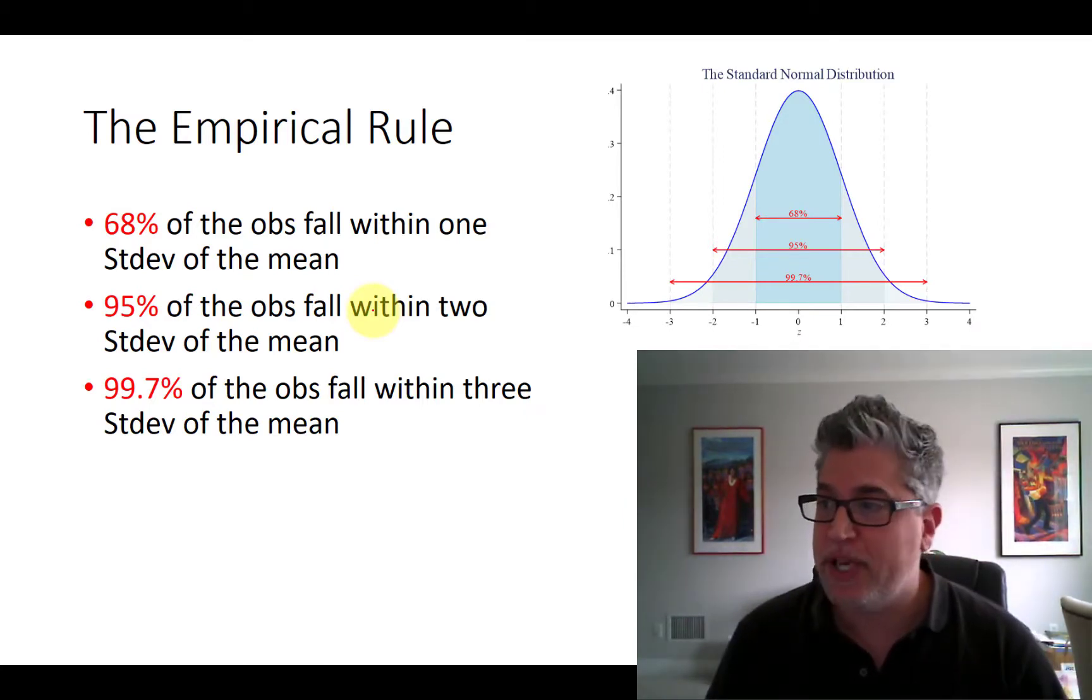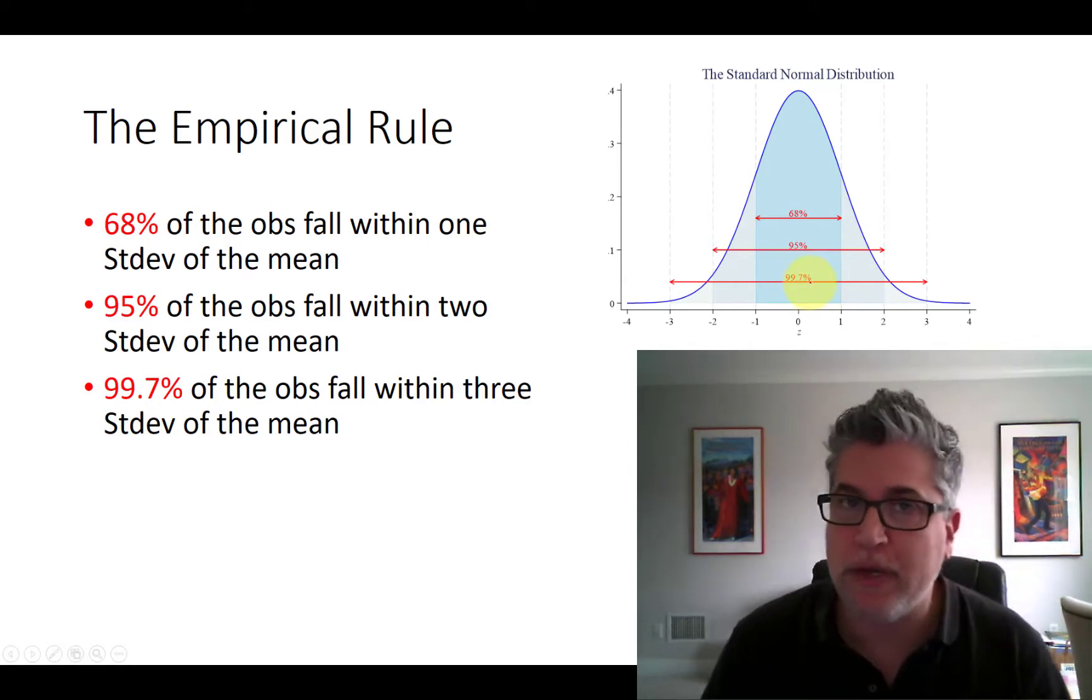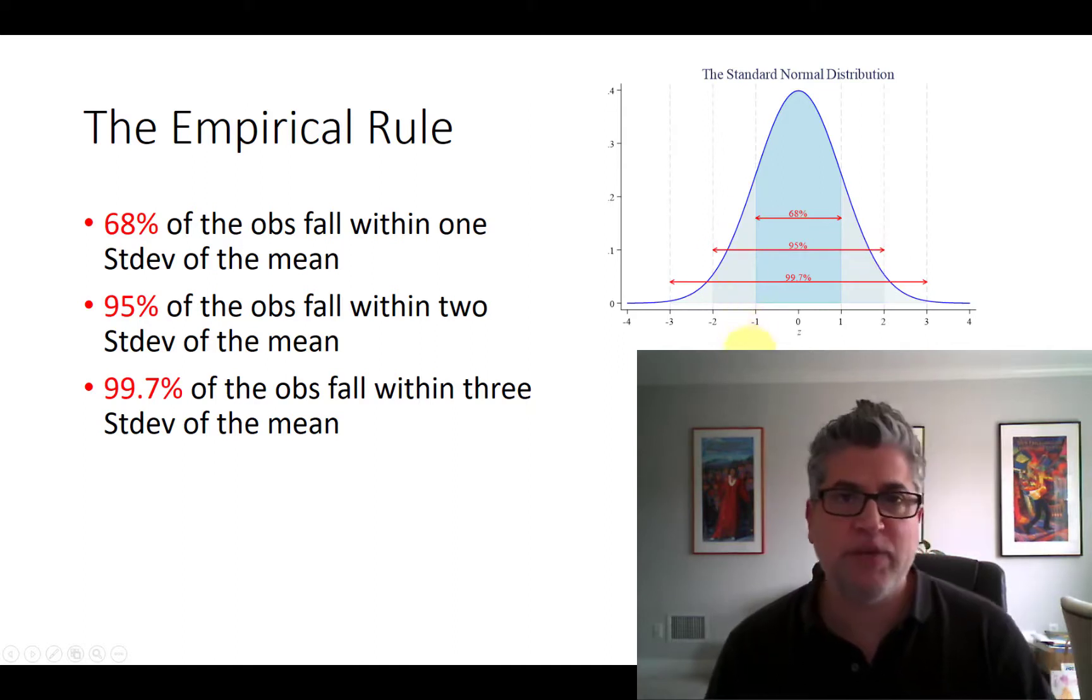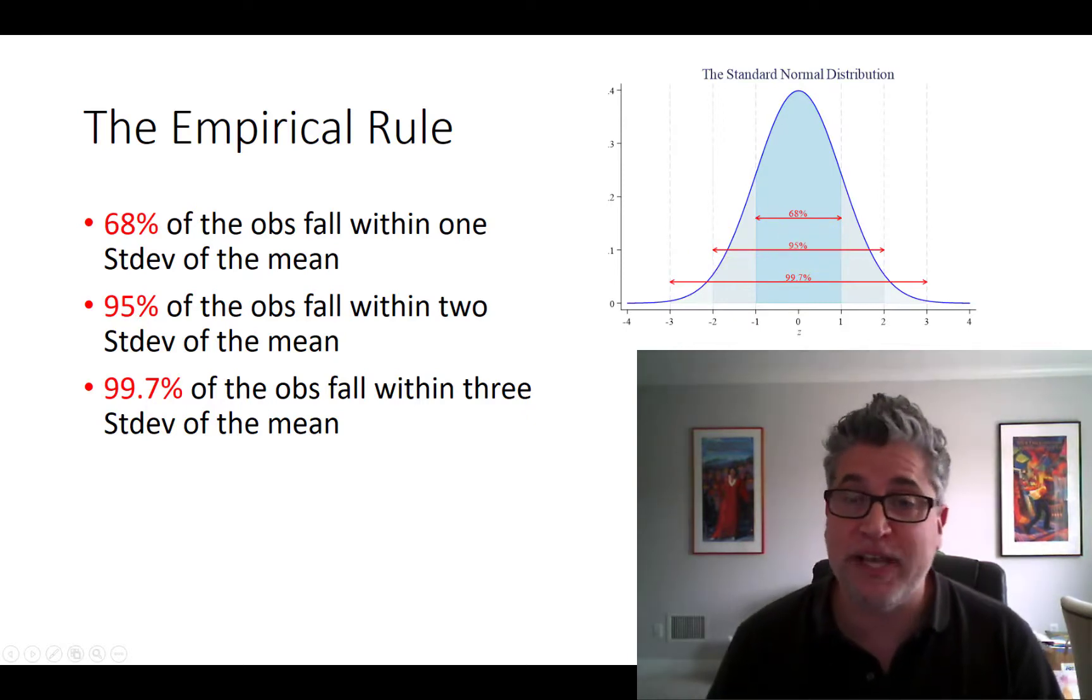68% of all of your observations, I don't care of what, will lie plus or minus within one standard deviation of the mean. And 95% of all of your observations will lie within plus and minus two standard deviations from the mean, whatever your mean and standard deviation happens to be. In 99.7%, almost all of your observations will lie within three standard deviations of the mean.